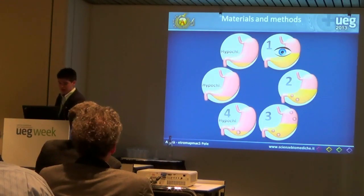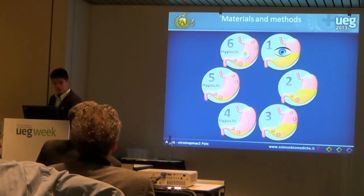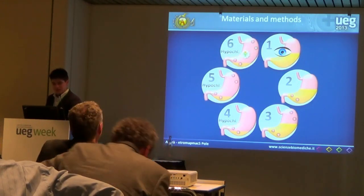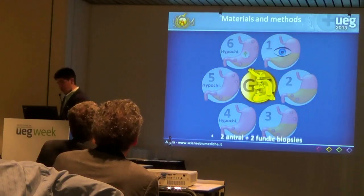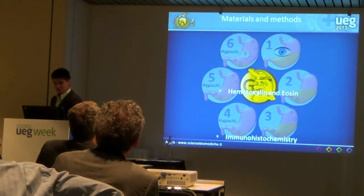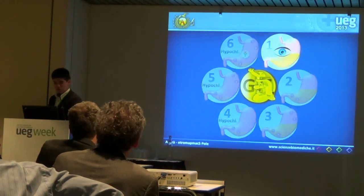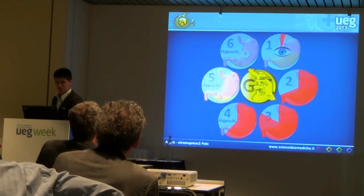Strategy four includes biopsies only in the antrum. Strategy five includes biopsies in the antrum and the oxyntic mucosa. Strategy six is the same as the previous but also performing immunohistochemistry. Taking the complete histological evaluation as a gold standard, we determined the diagnostic performance of each strategy by evaluating how many pathological conditions identified with the complete histology would have been found by each strategy.